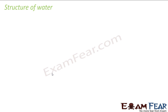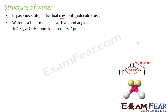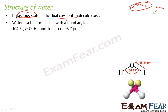Let us talk about the structure of water. In the gaseous state, individual covalent molecules exist as H2O. In liquid water, there are a lot of water molecules and hydrogen bonding is involved. You must have seen those clustered water molecule structures in the hydrogen bonding chapter — they are clusters of water molecules all linked by hydrogen bonding. But in the gaseous state, individual covalent molecules of H2O exist.